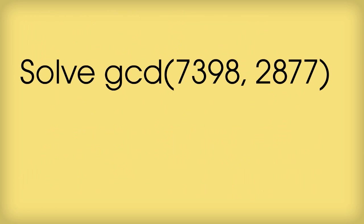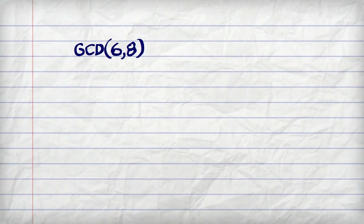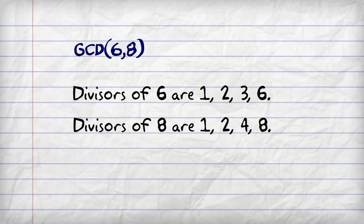Before we solve the problem, a couple of comments about the GCD. If we look at the GCD of 6 and 8, the D tells us to look at the divisors which you can see here for both 6 and 8.